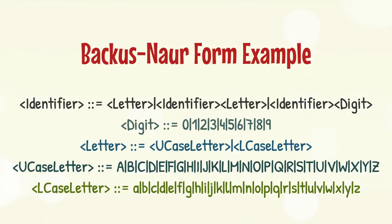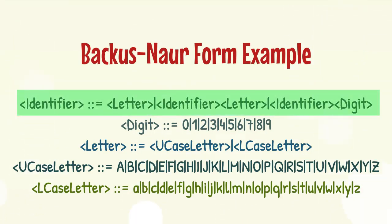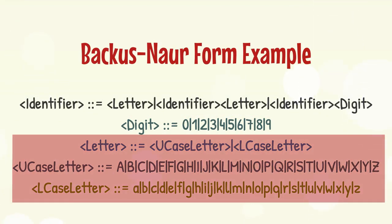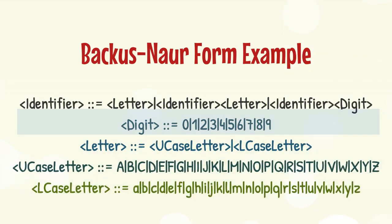Let's see another comprehensive example to consolidate students' concept. This BNF shows that an identifier may consist of a single letter, or many letters, or a single or many letters followed by digit or digits. The meaning of letter is already defined as capital or small letters from A to Z. Similarly, a digit may be any number from 0 to 9.